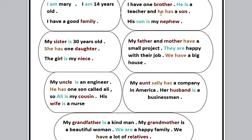And he has a son. استخدمنا في أول الفقرة I have، وهنا he has. كلاهما بمعنى عنده أو لديه أو يملك، ولكن مع السابجكت I استخدمنا have، ومع he استخدمنا has. He has a son - son يعني ابن. His son is my nephew - يبقى nephew معناها ابن الأخ.